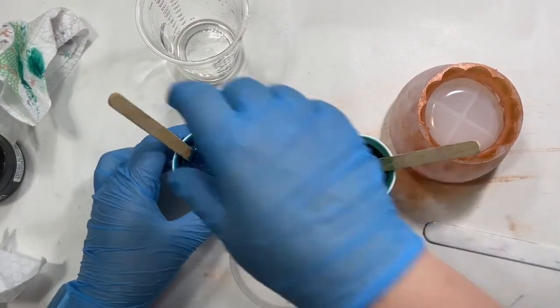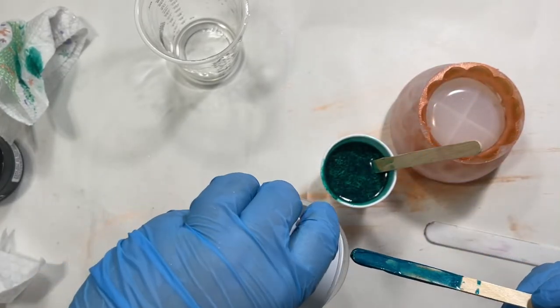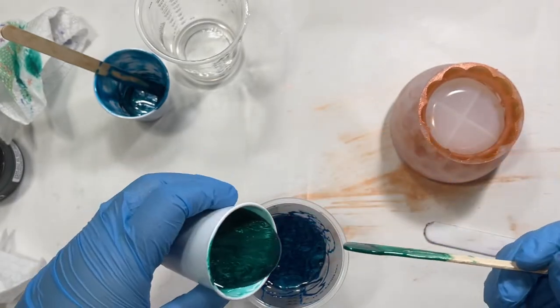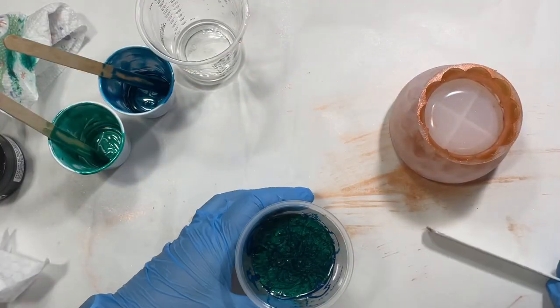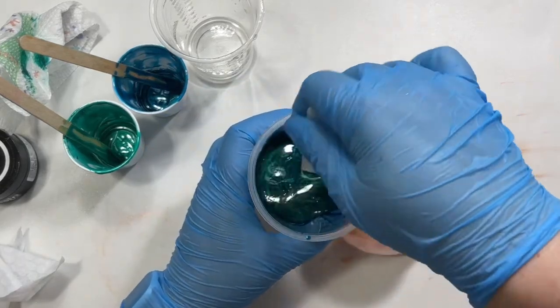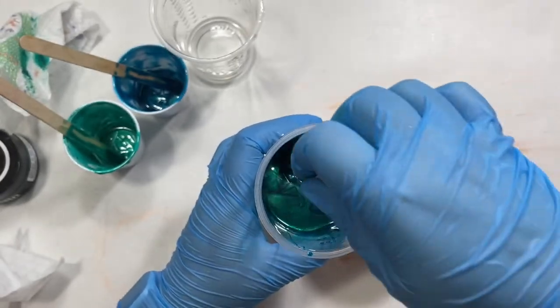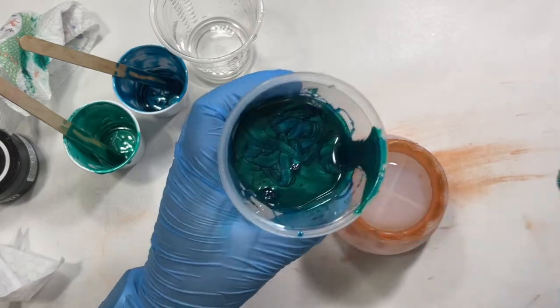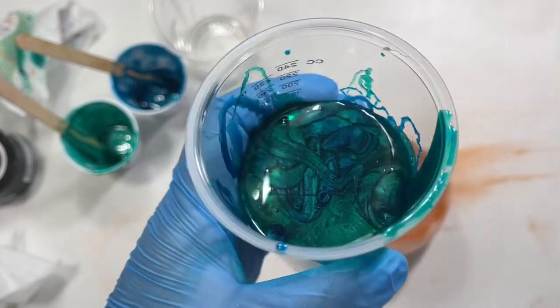All right, so what I'm gonna do is pour these both in here. And then I'm gonna mix them but just a tiny bit. All I want to do is kind of swirl the colors together, I don't want to combine the colors. So that's all I'm going to do, just that little bit.